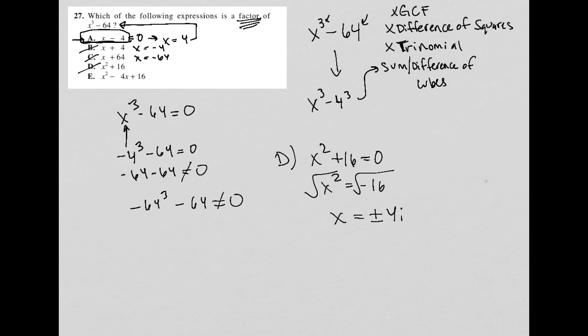And just for the sake of time, the same thing will happen with E. There isn't a value that comes out of factoring E. Setting x squared minus four x plus 16 equal to zero that can then also be plugged into this x here and make that original binomial equal zero.